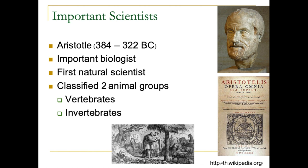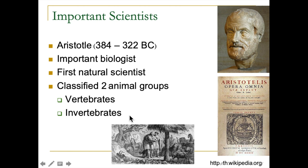The taxonomic idea has a long history, dating back to the Greek empire. Around 300 years before Christ, the first biologist to establish a system for living things was Aristotle. Aristotle grouped animals into two groups: vertebrates and invertebrates. This was the first systematic classification in the world that helped humans categorize animals.